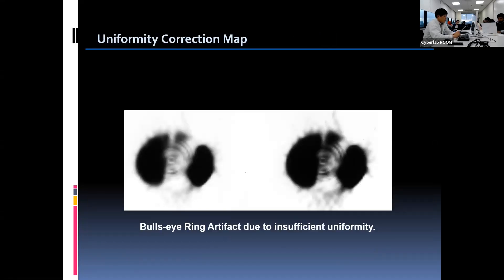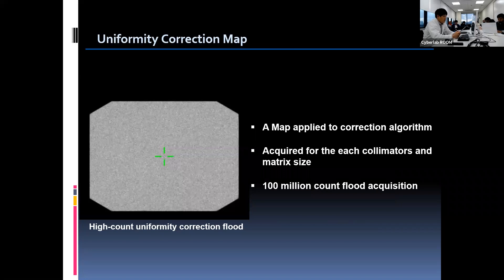This image shows the bullseye ring artifact in the SPECT image due to non-uniformity. Non-uniformity across the field of view must be corrected for both planar and tomographic image quality. Especially in tomographic imaging, small variations in uniformity are multiplied by the number of projections, causing artifacts in the reconstructed image. To solve this, a high-count uniformity correction map should be acquired and stored. The uniformity correction flood is then used as a map applied to the correction algorithm for every pixel in the image.